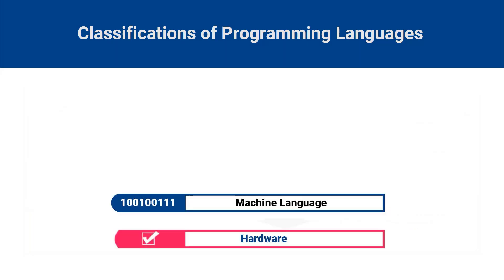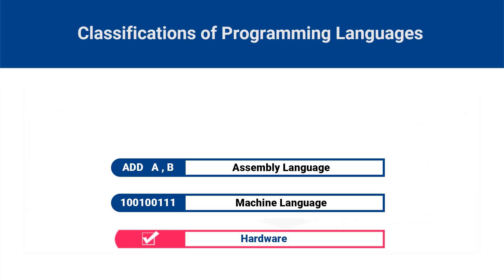The lowest level of programming language is machine language, which consists of binary digits — zeros and ones — that directly manipulate the computer hardware. Machine language is very hard for humans to understand and use, but it is the fastest and most efficient way to program a computer. The next level of programming language is assembly language, which is more readable than machine language but still requires a lot of knowledge of computer hardware. Assembly language uses shorthand names or mnemonics for machine instructions, and it also has some additional features that make it easier for humans to use.